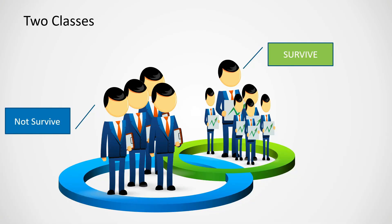In this problem, the objective is we have some information about the passengers in the Titanic ship and we need to identify whether the passengers are going to survive or not after the shipwreck. We need to build a deep learning or machine learning model, input the features about the passengers, and predict whether they are going to survive.